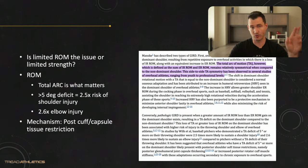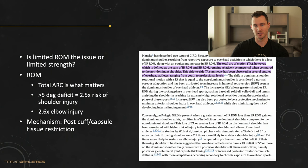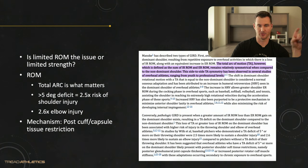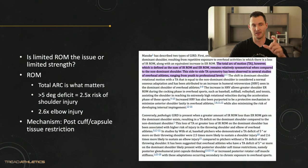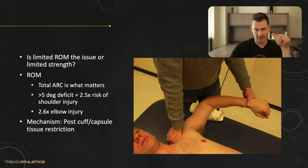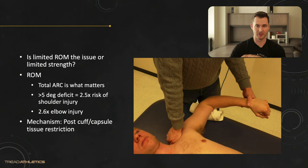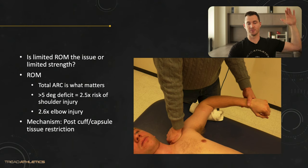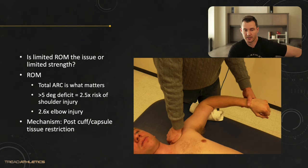If you have more than a five-degree total arc deficit between sides, there's a 2.5 times increased risk of shoulder injury and a 2.6 times increased risk of elbow injury. The authors suggested a link to the posterior capsule and posterior cuff: the back side of the shoulder develops tissue restrictions — it gets really dense, gritty, and tight. Here's an example of how to assess this: from a side view, the clinician stabilizes the scapula to assess pure shoulder motion rather than getting scapular compensation.